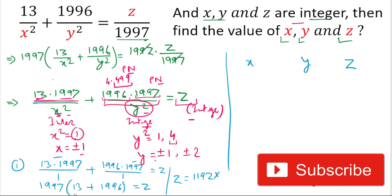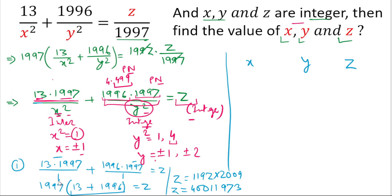We calculate 1997 × 2009, and the value of z will be 4,001,973. So for x = ±1 and y = ±1, the value of z is 4,001,973.